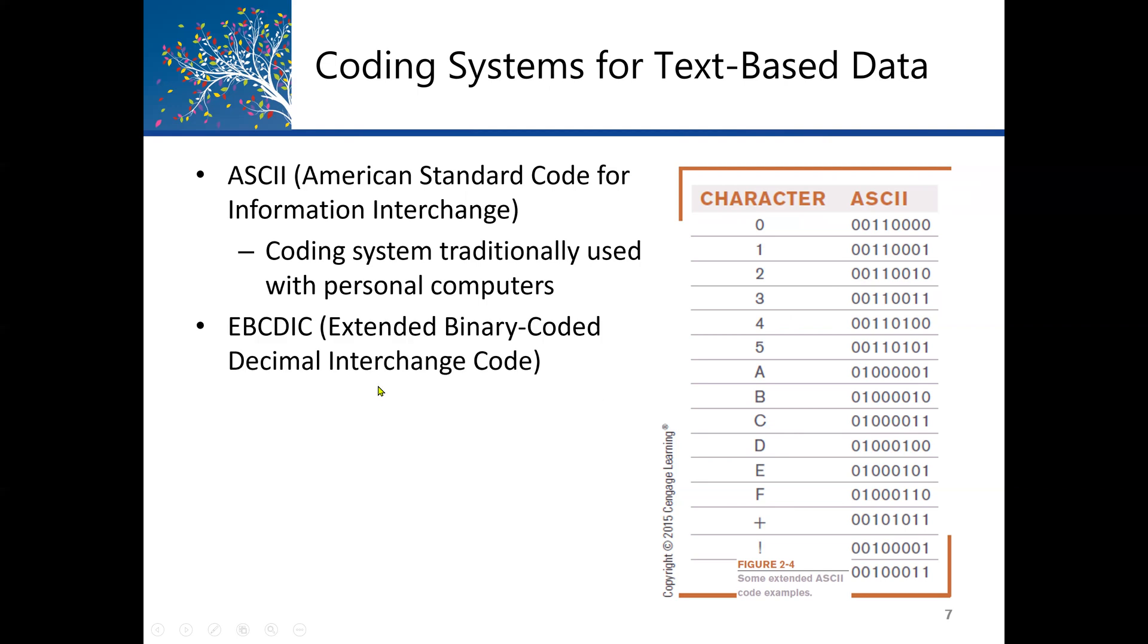We also have another standard called the Extended Binary Coded Decimal Interchange Code, or EBCDIC. The difference between the two is that ASCII is up to 128, and EBCDIC has 256. Some of them cover universal standards also, which cover other different languages such as Chinese language, Japanese language, etc.